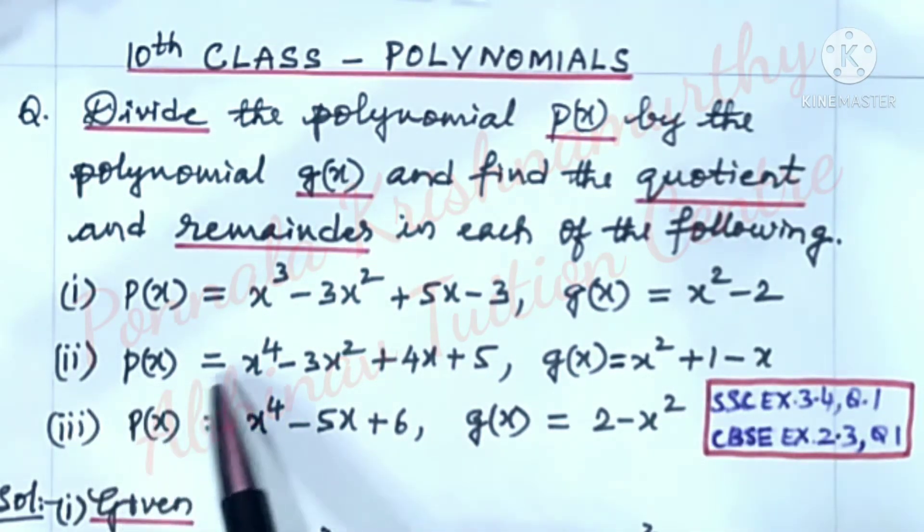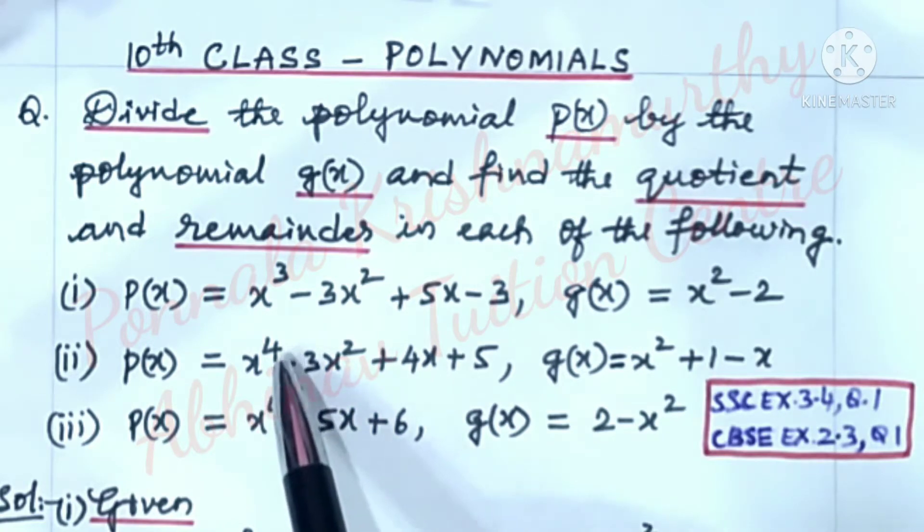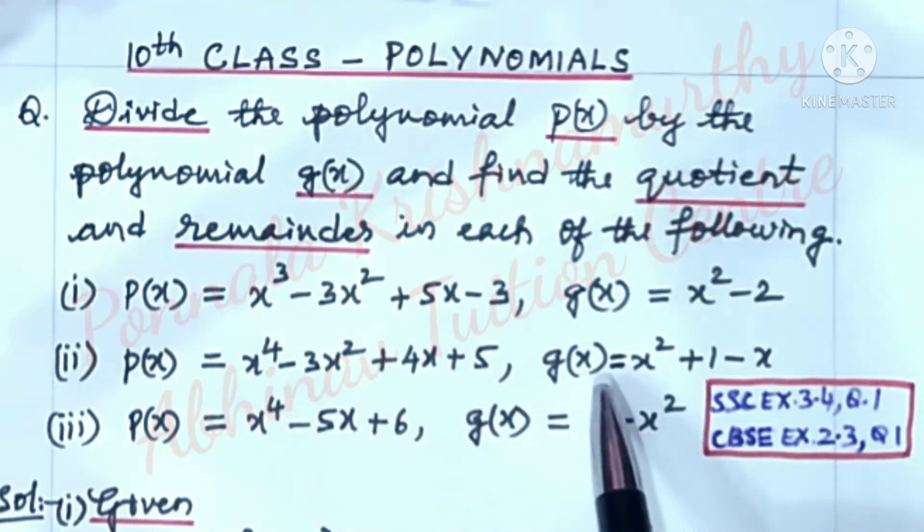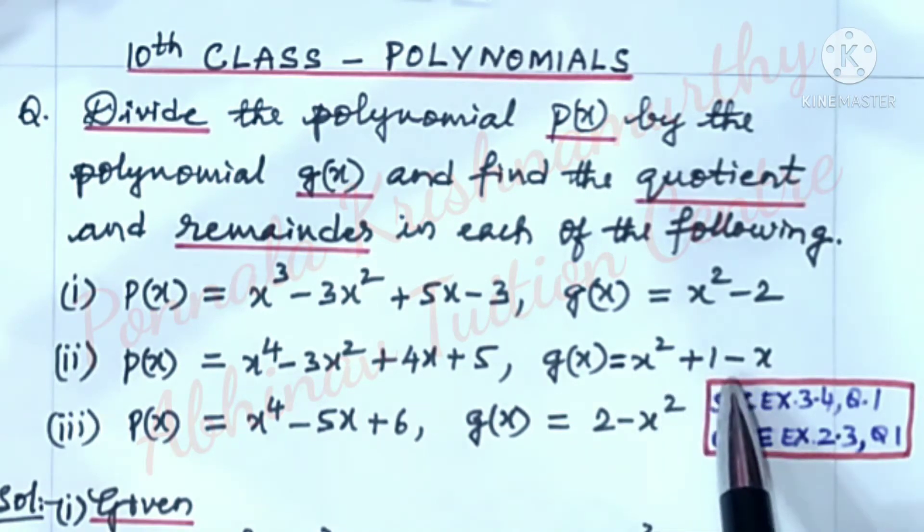2. p(x) is equal to x⁴ - 3x² + 4x + 5. g(x) is equal to x² + 1 - x.